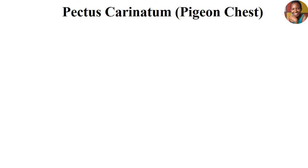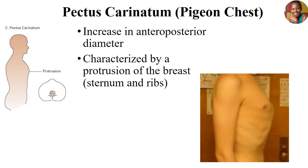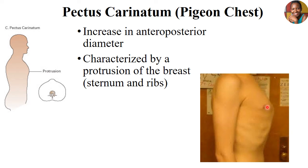The last chest shape is the pigeon chest, or pectus carinatum. With the pigeon chest, there is an increase in the anterior-posterior diameter, and what you observe is a protrusion of the breast bones — specifically the sternum and the ribs. Because of this protrusion, the anterior-posterior diameter increases, as opposed to pectus excavatum where it was reduced. The patient presents with a protruded breast — this is what the pigeon chest looks like.